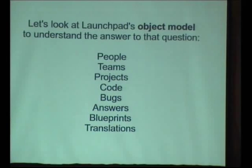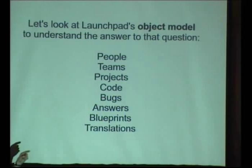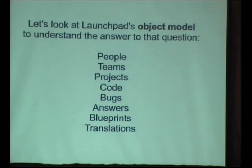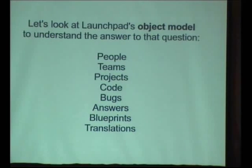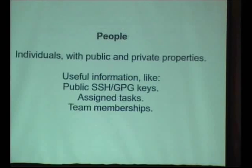The way I broke this talk down — there are a lot of slides, but I'm flying through them quickly. I try to conceptualize how to explain what I like about Launchpad, and it comes down to what I'm calling the object model. To me, this is the way I look at the objects that Launchpad manages: People, teams, projects, code, bugs, answers, blueprints, translations. Some of these are across the header at the top of Launchpad, and some aren't, but they are important aspects of the workflow.